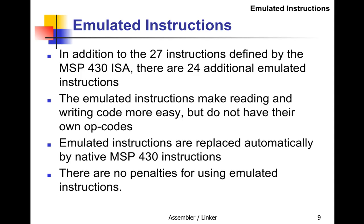There are 27 native MSP430 instructions we've looked at, defined by the instruction set architecture. But there are also 24 additional emulated instructions — assembly-level constructs built from the 27 native instructions. They're easier to read than their native equivalents. Using emulated instructions makes your assembly code easier to read, and they are replaced automatically when you assemble the program by the corresponding native instructions. There is no penalty for using emulated instructions.